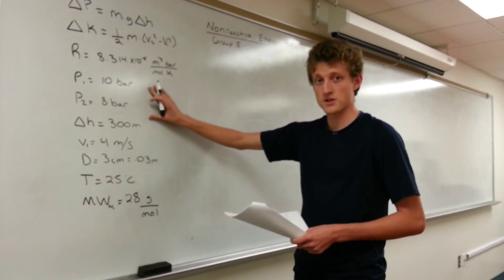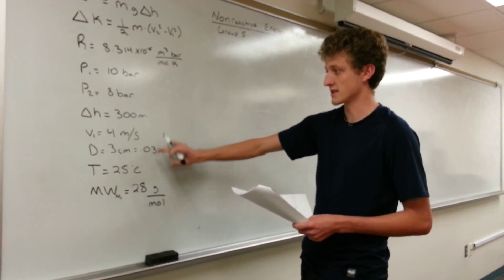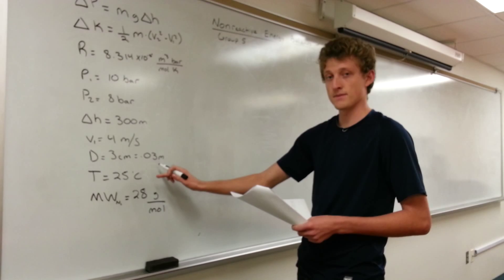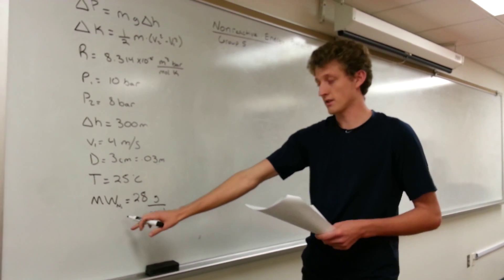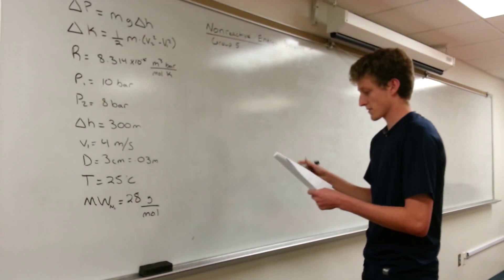I wrote down the initial information: the initial pressure, the final pressure, change in height, initial velocity, diameter converted to meters, temperature, and the molecular weight of nitrogen as 28 grams per mole.